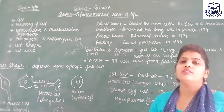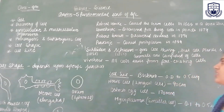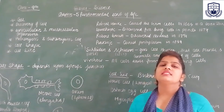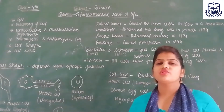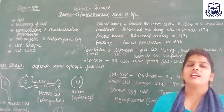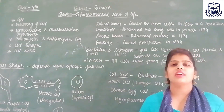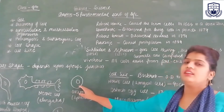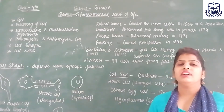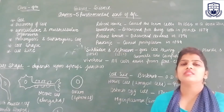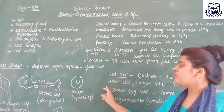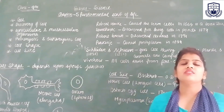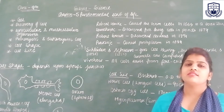Cell theory के postulates: First — जितने भी living organisms हैं, जितने plants, animals, या human beings हैं, सब cell से मिलकर बने हैं। Second postulate — जो भी new cell arise हो रही है, वो pre-existing cell से arise होती है। एक cell divide होकर दो cells बनाती है, और वो नई cells पहली वाली cell के division से ही बनती हैं।